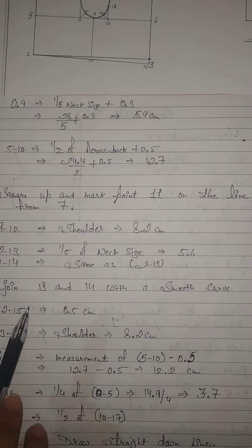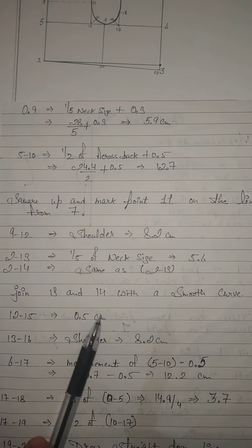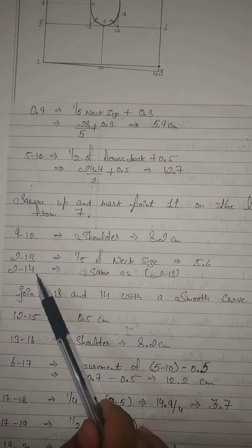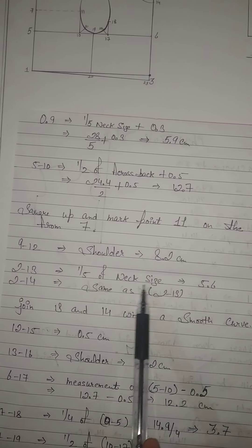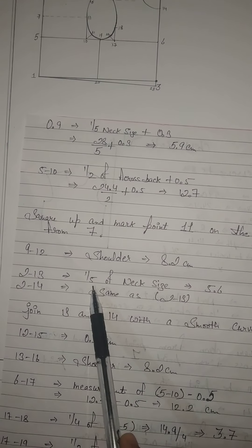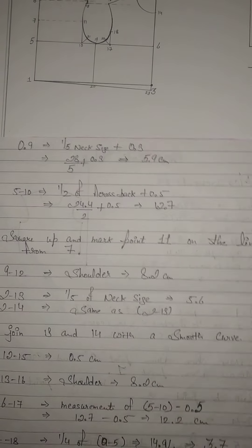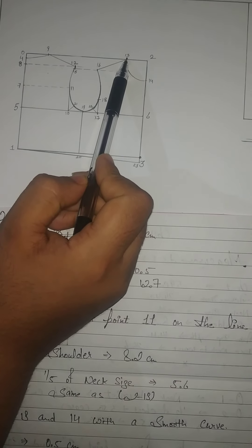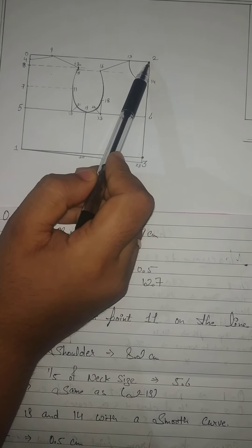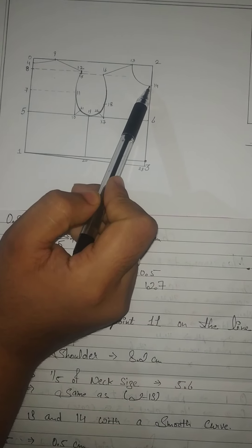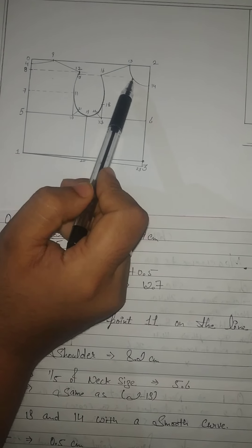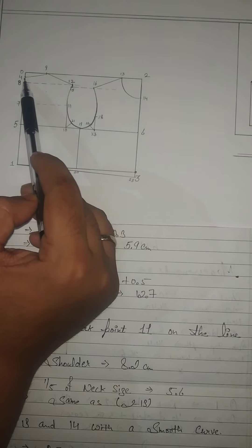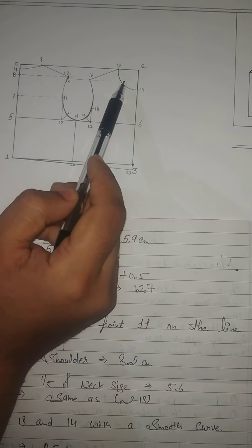After joining, mark point 13. Then 2 to 13 and 2 to 14 is your neck size divided by 5, that is 5.6 cm. From point number 2, mark 5.6 cm for point 13, and 5.6 cm for point 14. This gives you your back neck and front neck shapes.